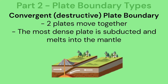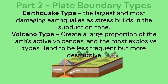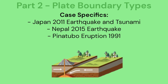Convergent or destructive plate boundary: here two plates move together and the most dense plate is subducted and melts into the mantle. Earthquakes are the largest and most damaging as stress builds in the subduction zone. Convergent boundaries create a large proportion of the earth's active volcanoes and the most explosive types, which tend to be less frequent but more destructive. Case specifics include the Japan 2011 earthquake and tsunami, the Nepal 2015 earthquake, and the Pinatubo eruption of 1991.